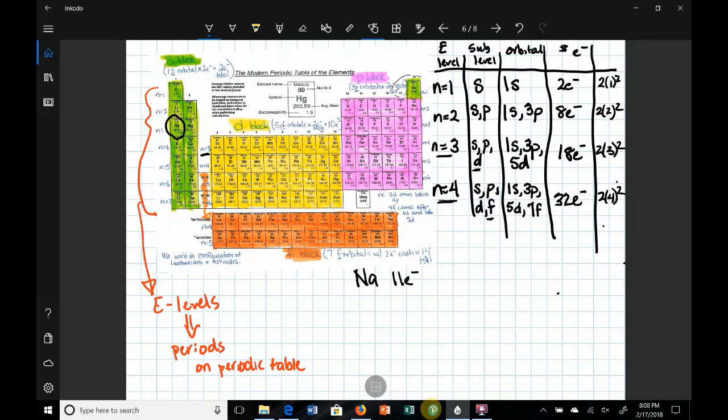And so we can write our electron configuration based on the periodic table. So counting our electrons we see we have 1, 2. We have 2 electrons in the first energy level. Moving down the periodic table notice that we have 2 electrons in the 2s energy level. As we move across notice that we have 6 electrons in the 2p energy level followed by 1 electron in the 3s energy level.